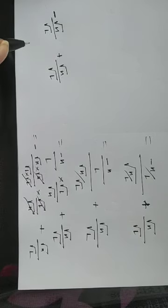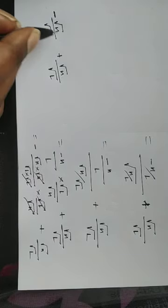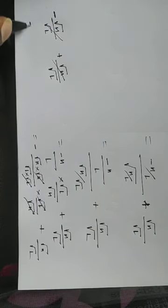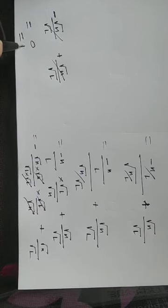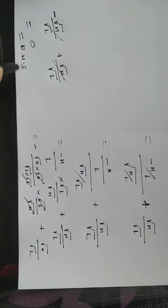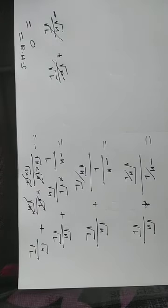So if we cancel it, we have 0 on the LHS, and RHS is also 0. So LHS is equal to RHS, and the result is proved. Thank you.